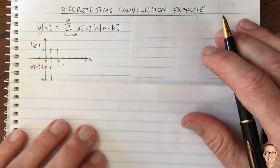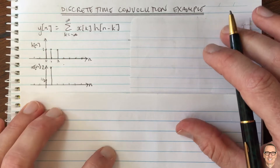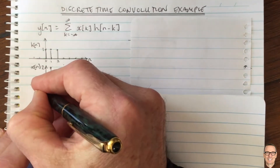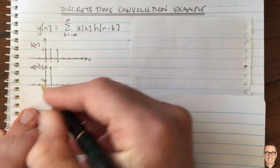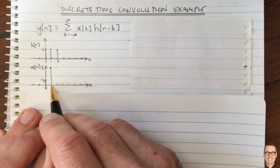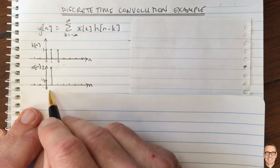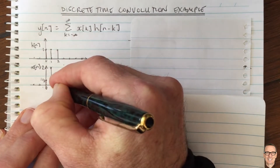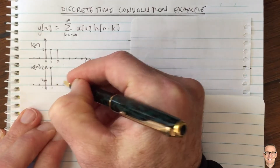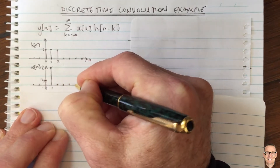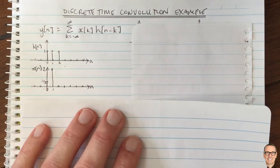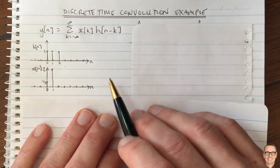Now let's look at the input signal x. There's no input for negative time. At time zero the input is one half, followed at time one by an input of two, and then zero input after that.